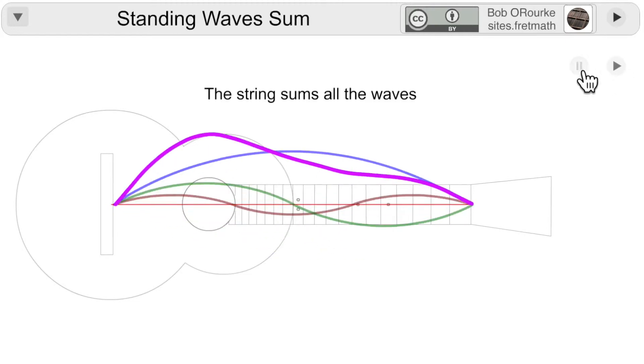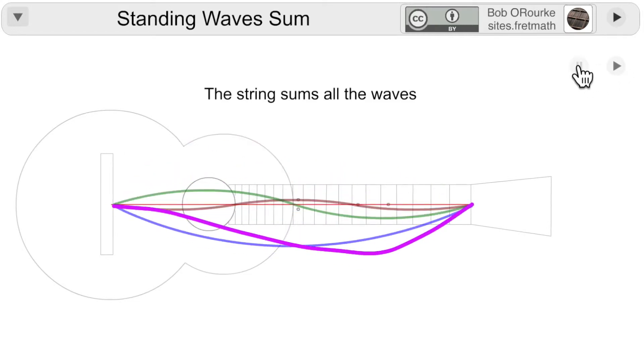Now here is the string as the sum of all the standing waves. It's the same shape as you'd get with the traveling wave imagery.